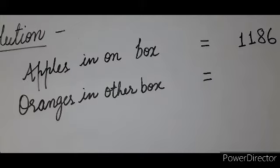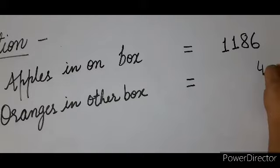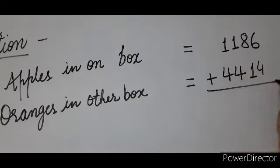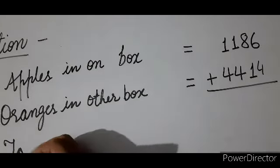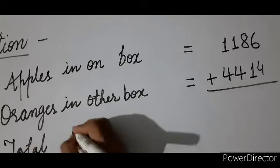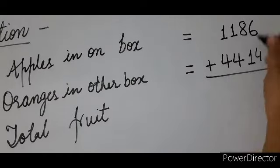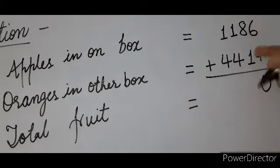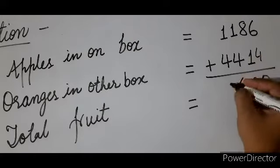How many oranges? Write from the right side: 4, 1, 4, 4. Then plus sign. Third line: total — you are finding total fruit by adding. Write 'Total fruit', add equal sign, then add: 6+4=10 carry 1, 8+1=9, 9+1=10 carry 1, 1+1=2, 2+4=6, then 4+1=5. So the answer is 5600.